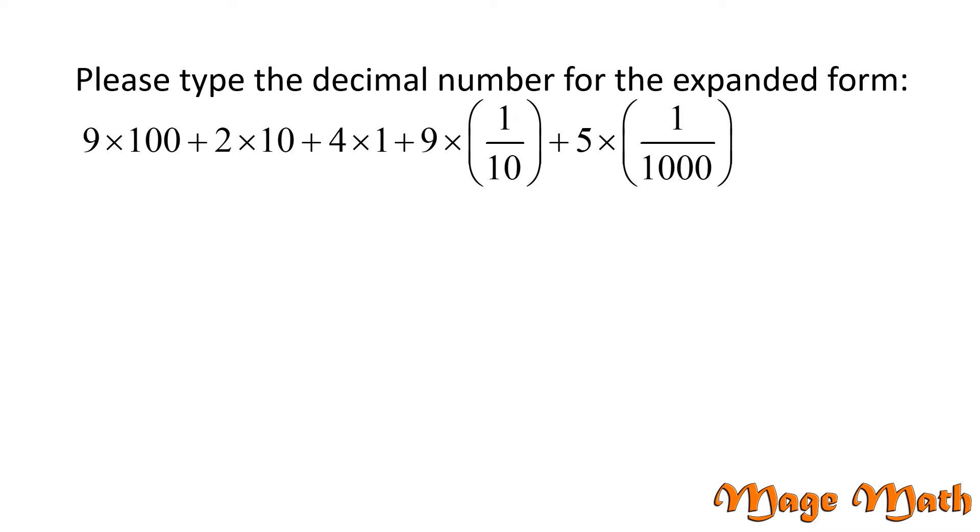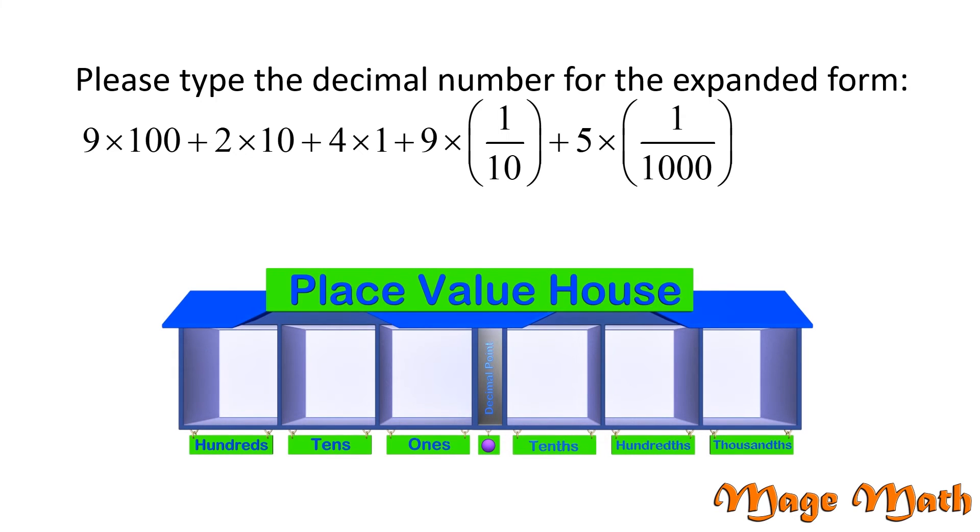Can you help me with another problem? Please type the decimal number for the expanded form of 9×100 + 2×10 + 4×1 + 9×(1/10) + 5×(1/1000). Let's go straight to our place value house.